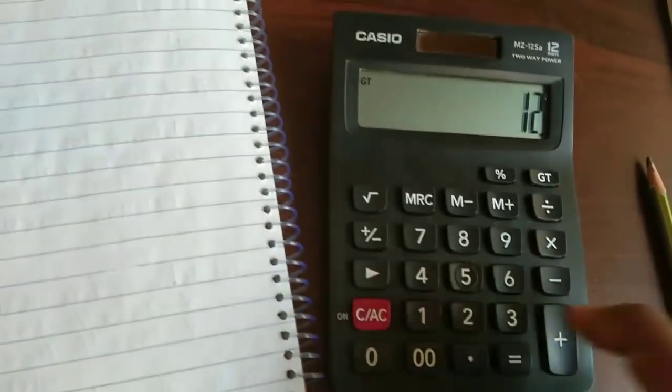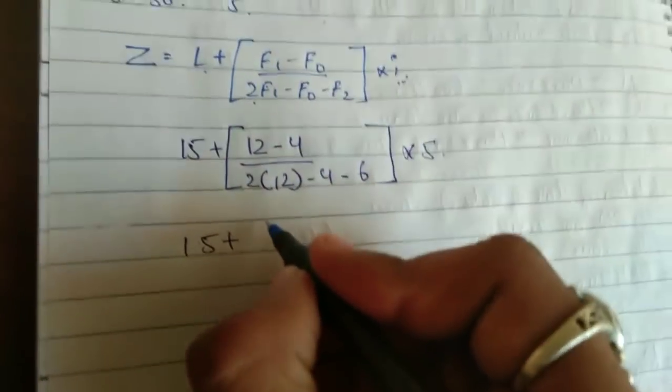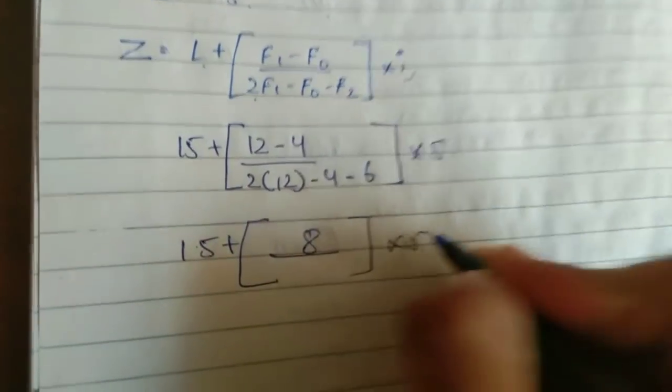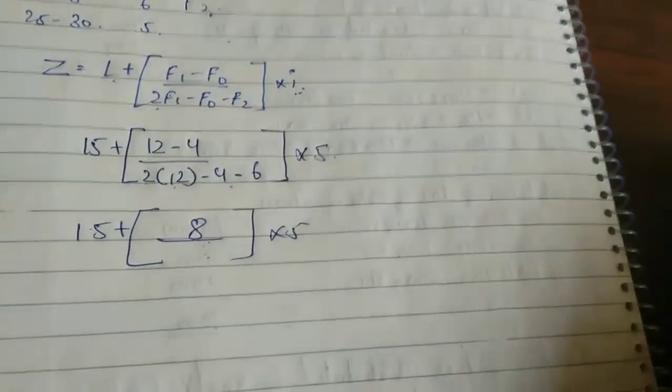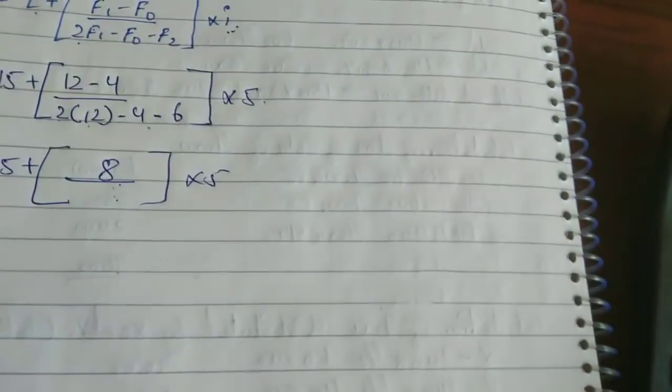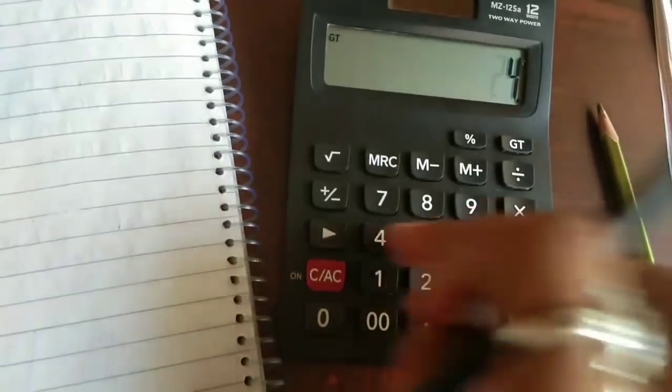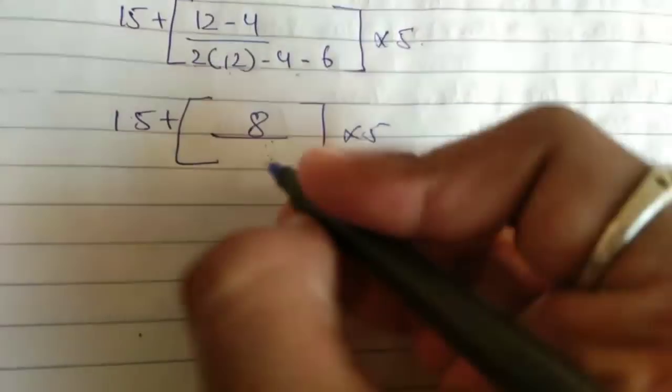So check it out here. See, 12 minus 4... 2 plus 7 here, 12 positive 2 minus 4 negative 0. We have to do this. So here check: 2 into 12 minus 4 minus 6. So 14 is answer.